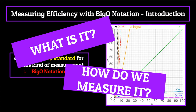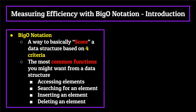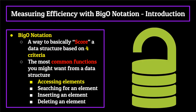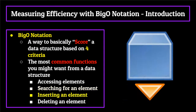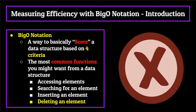Programmers have developed this idea of big O notation as a way to basically score a data structure based on a few different criteria. For the purposes of this video, we will be using four criteria representing the most common functions you might want from a data structure: the ability to access a specific element within the data structure, search for a particular element, insert an element, and remove an element from the data structure.